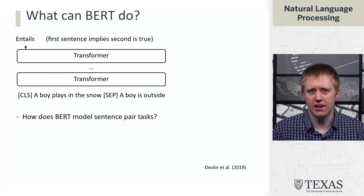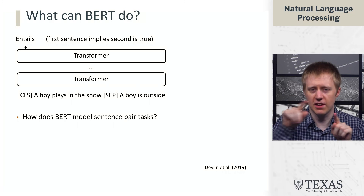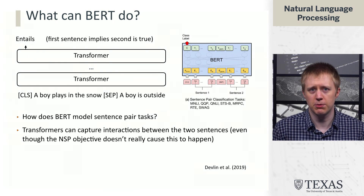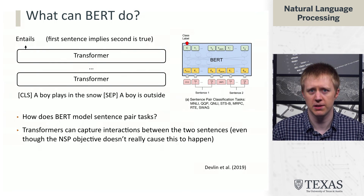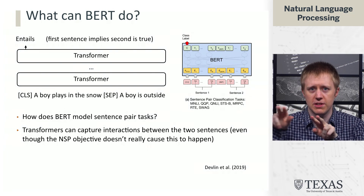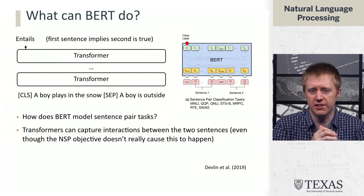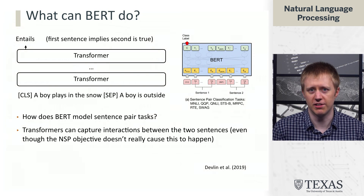Why is BERT so good at sentence pair tasks? Transformers are good at taking seemingly independent chunks of input and using the self-attention mechanism to figure out an alignment between them — they capture interaction between the two sentences. Most of this happens during fine-tuning; the next sentence prediction objective isn't really all that important for performance. When you have two sentences, self-attention allows the model to figure out which parts are supported by the other, and for entailment, that mapping is learned across the 12 layers and multiple attention heads.